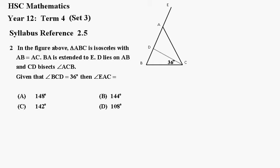BA is extended to E. D lies on AB and CD bisects angle ACB. Given the angle BCD is equal to 36 degrees, then angle EAC equals what?